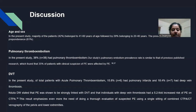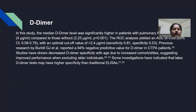DVT and the percentage of patients with pulmonary infarcts were also studied. This result emphasizes the need for thorough evaluation of suspected PE using a single sitting of combined CTPA and CT of the pelvis and lower extremity. Regarding D-dimer levels, the median D-dimer level was significantly higher in patients with PE compared to those without, and ROC analysis yielded an area under the curve with an optimal cutoff of more than 2.4 mcg per mL.